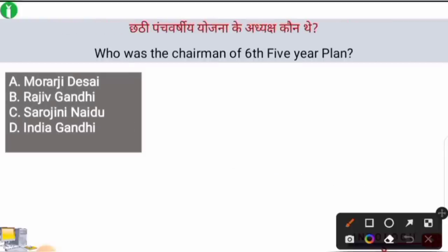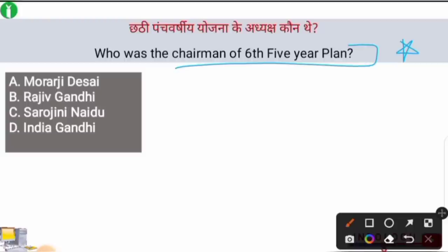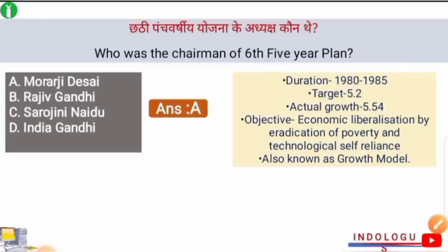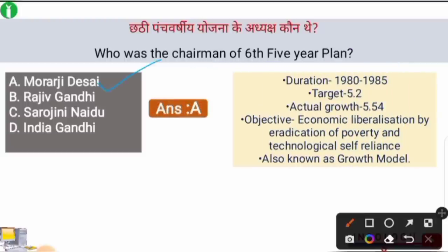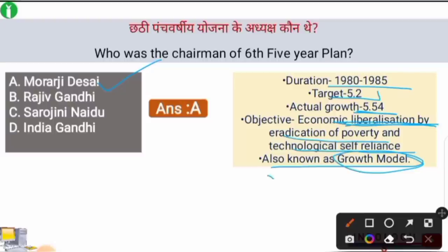Next question: Who was the chairman of the Sixth Five Year Plan? The right answer is option A — Morarji Desai was the chairman of the Sixth Five Year Plan. Its duration was 1980 to 1985. The target growth was 5.2% but actual growth was 5.54%, making it a type of success. Its objective was economic liberalization by eradication of poverty and technological self-reliance. The Sixth Five Year Plan is also known as the Growth Model.